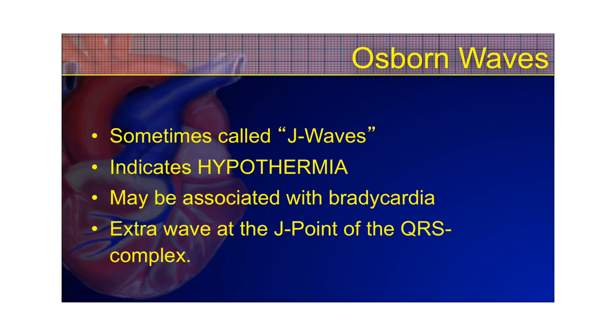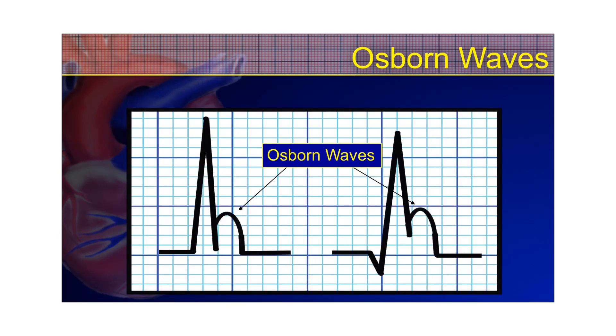Next, we have Osborne waves. Osborne waves, sometimes they're called J-waves, and they indicate hypothermia. And as I said before, the best tool to identify hypothermia is not an EKG. It's going to be a thermometer. Luckily, every EKG comes with a patient. Use your patient and use a thermometer to identify hypothermia, not your EKG. But I'm going to go ahead and draw what it looks like. So if this is your QRS, an Osborne wave is a little hump right on the back of the QRS complex. And that can occur with hypothermia. It may be associated with bradycardia. And it's an extra wave at the J point of the QRS, as I pointed out here. This might be a little bit better than my drawing. That's what an Osborne wave kind of looks like.